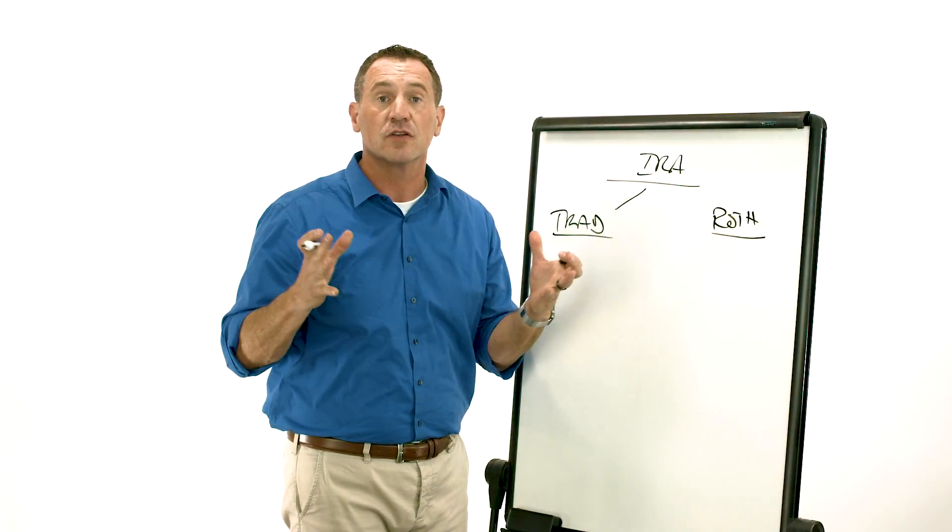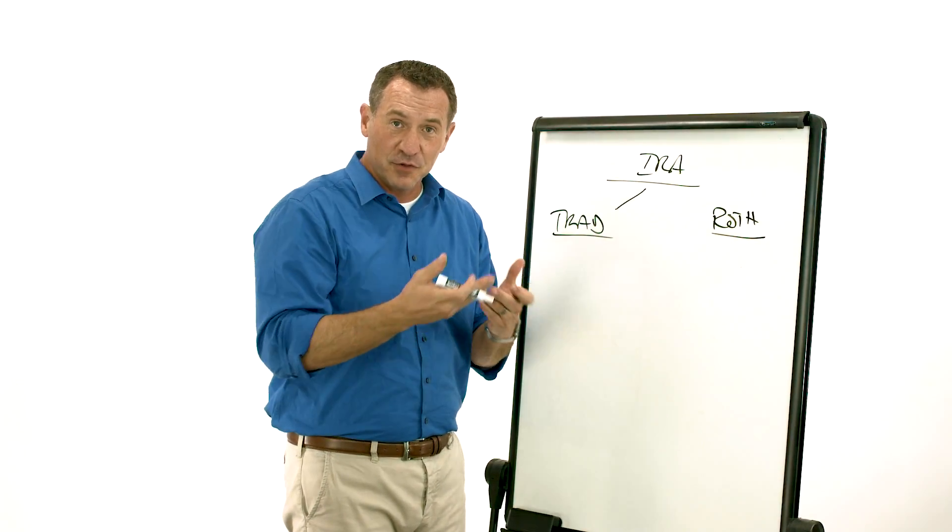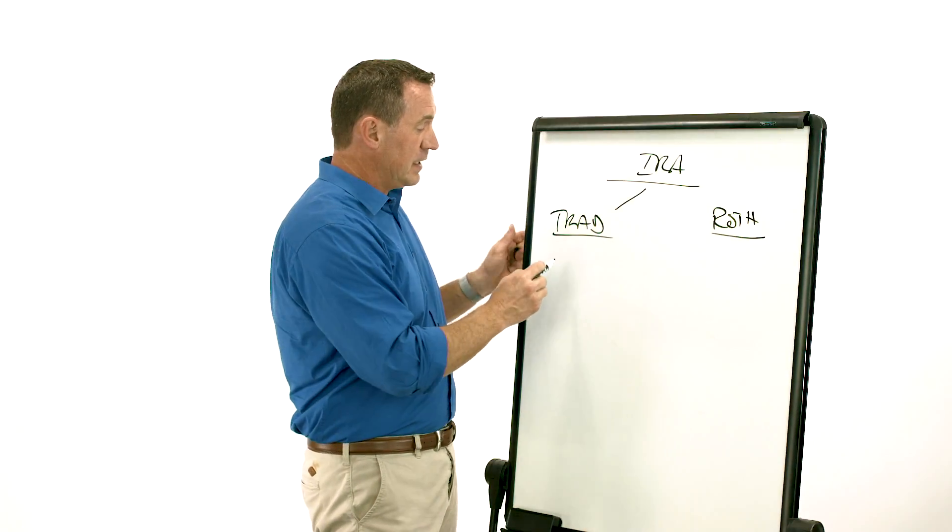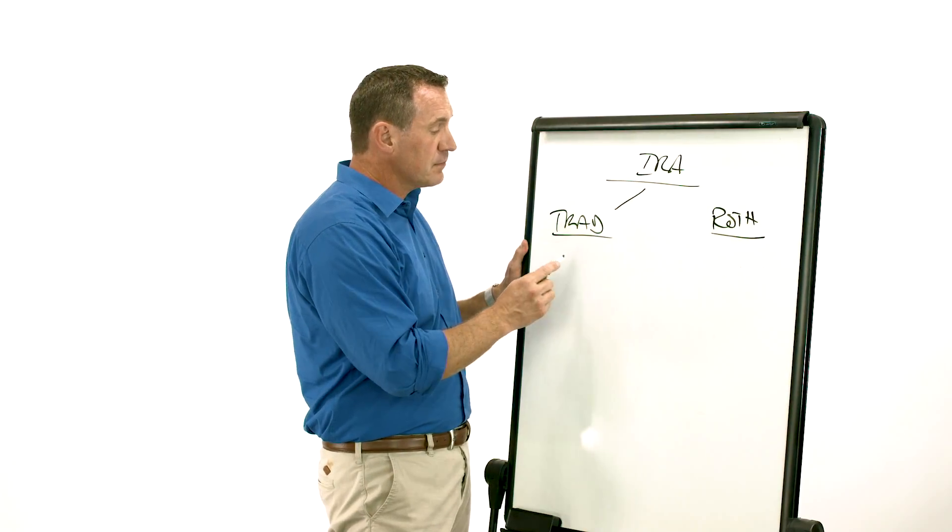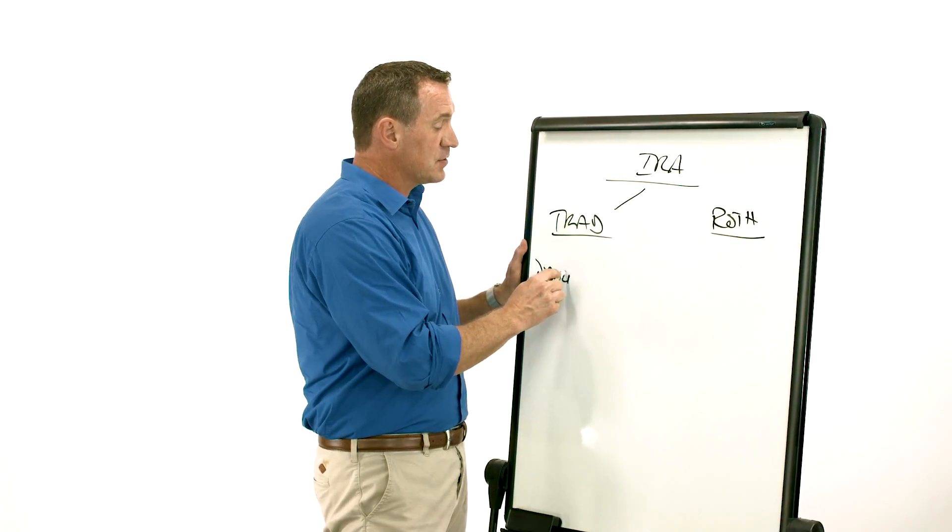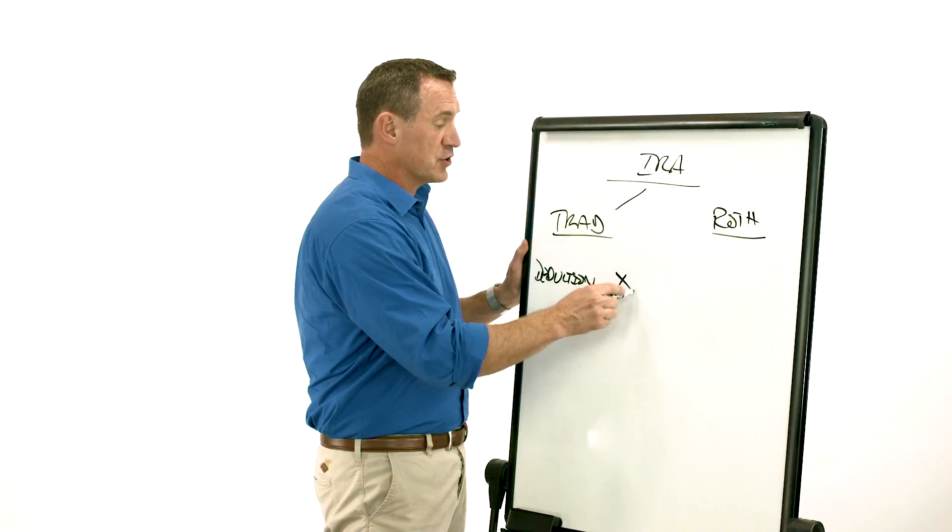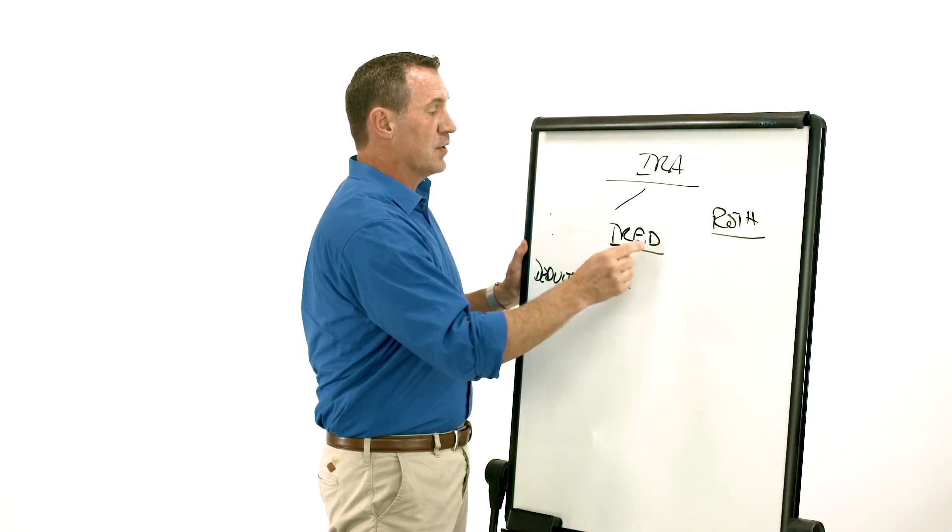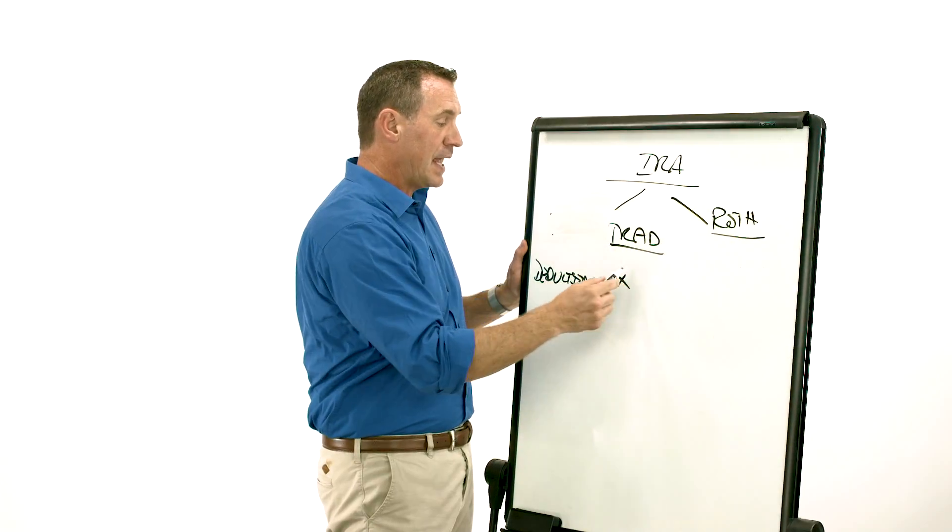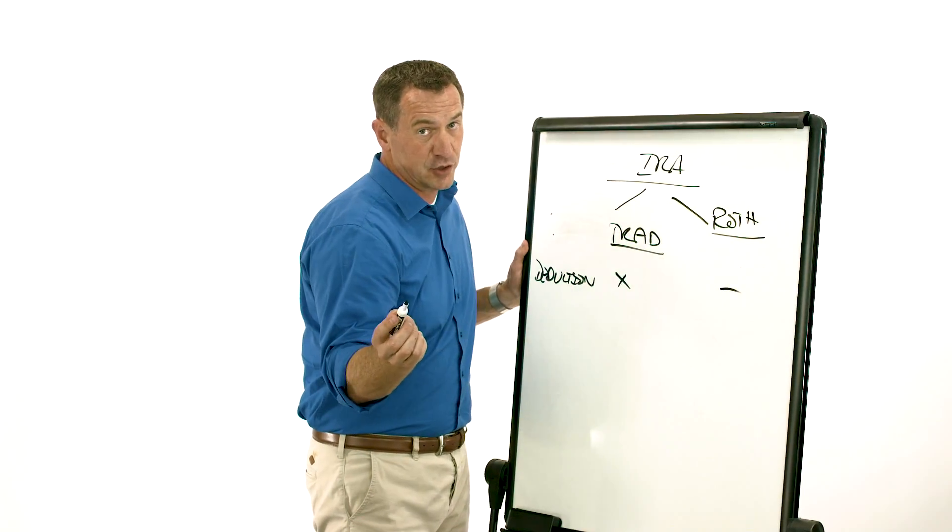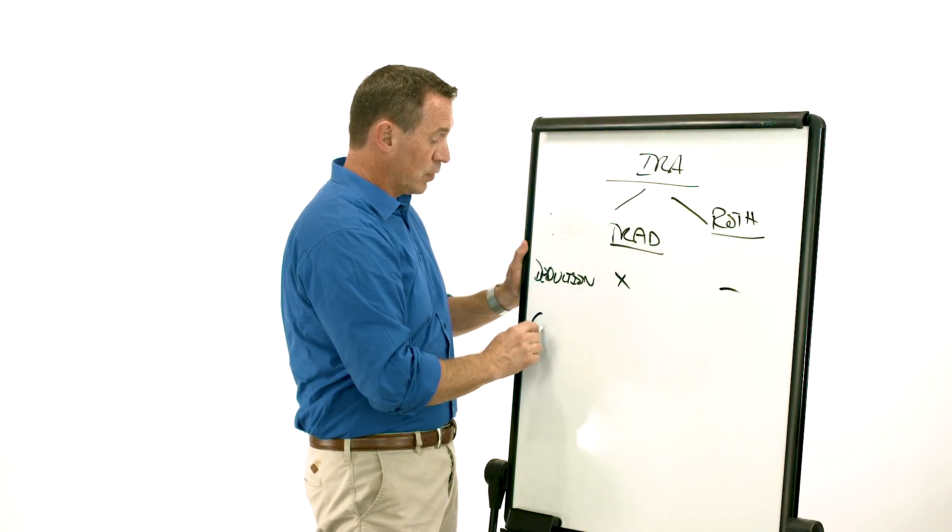They're both IRAs, they're just a little different. Now there's kind of three categories here that I think are pretty cool. You can say, well, do I get a tax deduction on the way in? And the answer is yes with a traditional. So let's move this over here. So I have traditional versus Roth, and yes, you get a tax deduction with a traditional, no tax deduction with a Roth. Now does it grow tax-free?